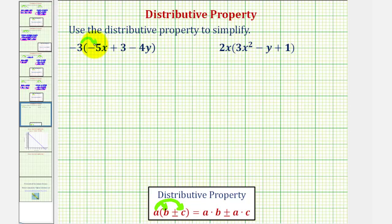So negative three times negative five x plus negative three times three minus negative three times four y.